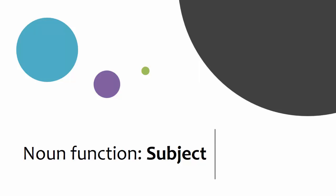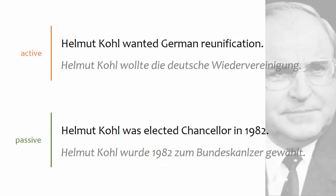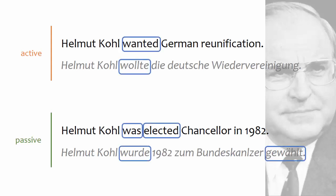A good place to start our investigation of noun and pronoun functions is with the subject. A great way to identify the subject is actually to locate the verbs first. In these examples, the verbs are circled in blue. Once you've done that, the functions of the remaining words start to reveal themselves.